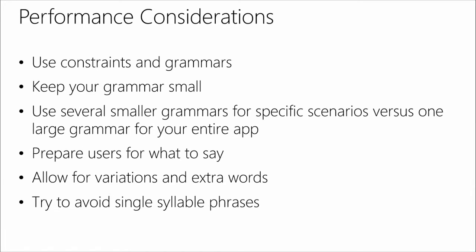Performance considerations: the platform for the most part takes care of performance, but there are things you should do to make sure the user's experience is good. Use constraints and grammar — the performance differences between using constraints and grammar versus not are dramatic. You're basically saving yourself a round trip to the web, because using programmatic lists and SRGS grammars, everything is done locally on the phone. Otherwise they have to record everything, send it over wireless, and it also depends on the quality of your connection.